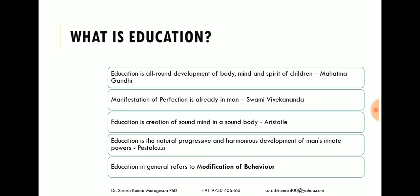Our national father Mahatma Gandhi defined the term education as all-round development of body, mind and spirituality of the children. What he means here is the holistic development of the children is called education. Another important person in India is Swami Vivekananda; according to him, education is the manifestation of perfection already in man — education is already within us, we have to give the space and explore it.